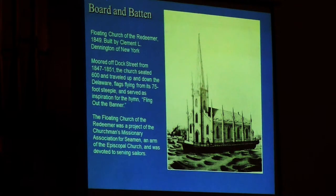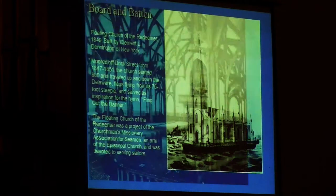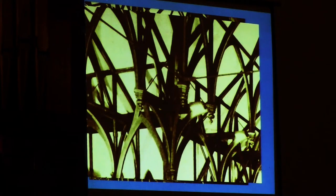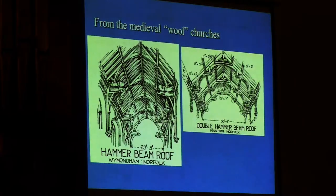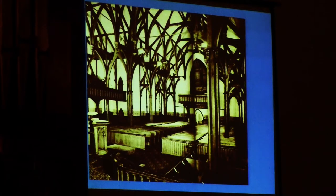One of the nice examples of Board-and-Batten is this floating church on the Delaware River, which was built as an Episcopal chapel for seamen so you could tow the church to where they were. It was an idea that took advantage of the fact that these were a light wooden structure instead of a heavy stone structure. Apparently it was the inspiration for the hymn "Fling Out the Banner." And this is the interior of First Church in Brunswick — a Gothic-derived wooden frame based on those hammer beams with angels on them in England, the hammer beam churches — and we get an example of hammer beam Gothic in Maine as a result of this enthusiasm.